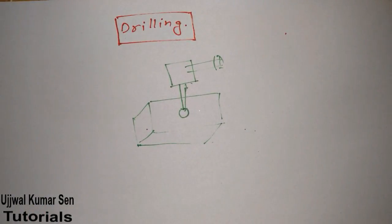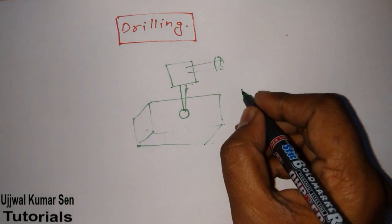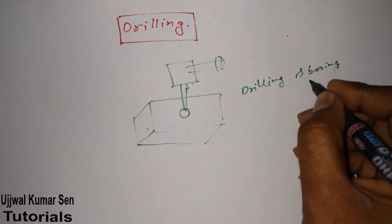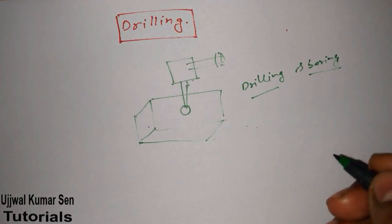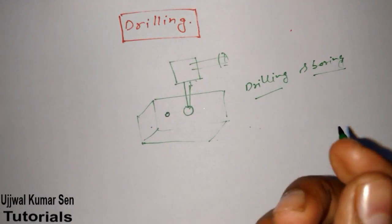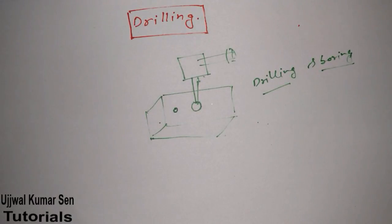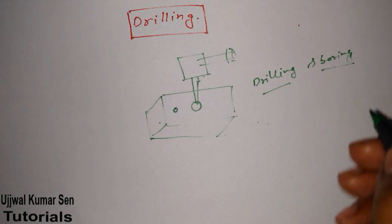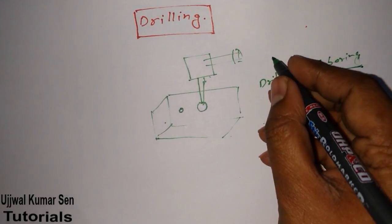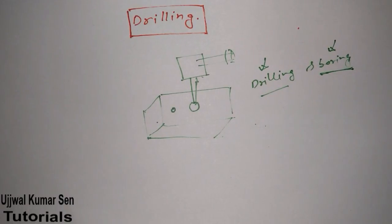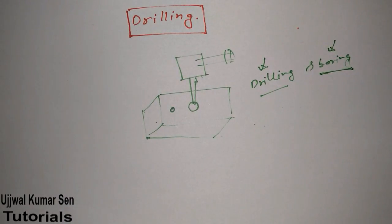One important difference between drilling and boring: drilling is used to create the first hole where no hole was present before. Boring is used to increase the size of an existing hole. So the first operation is drilling, and for increasing the size of the hole, we do boring.